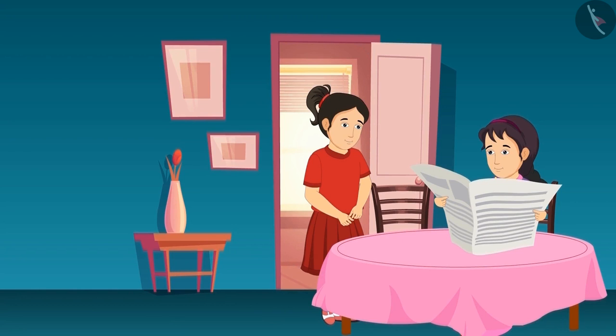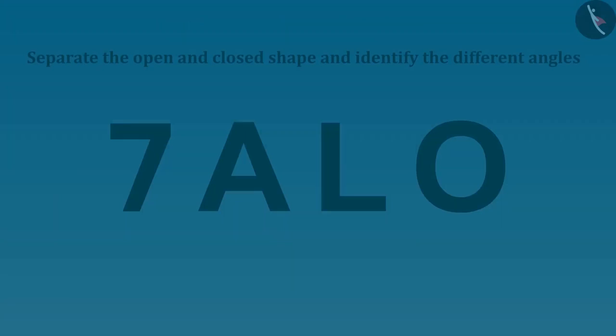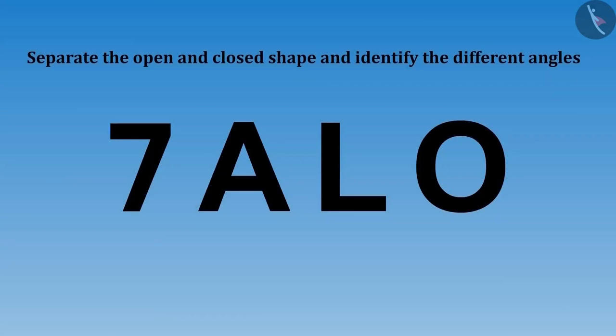Sister, what are you reading in the newspaper? Come on, let's play a new game. Meena got an idea of a new game after seeing the letters in the newspaper. She circles some alphabets and asks Reva: Can you separate the open and closed shaped alphabets and identify the different angles in them?